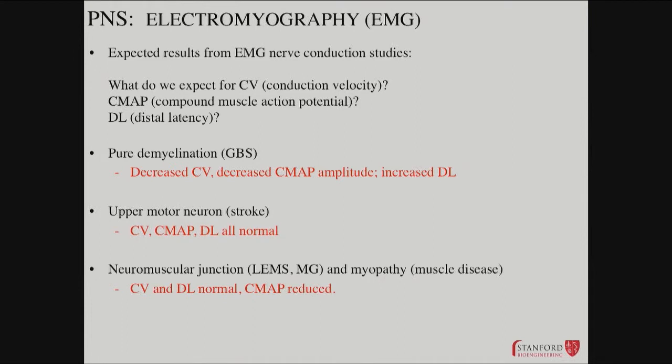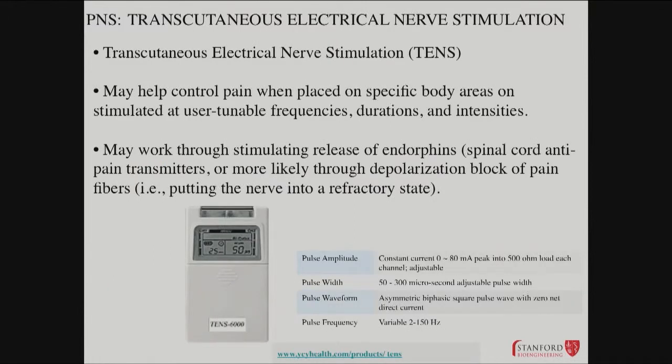With neuromuscular junction disorders, you get a different pattern. You get normal conduction velocity and distal latency because the nerves themselves are fine, so the speed at which the action potential gets down the axon is unchanged. But then things right at the muscle are altered — you get impaired release of neurotransmitter or impaired acetylcholine action, and you have reduced muscle action potentials. Very helpful diagnostically.